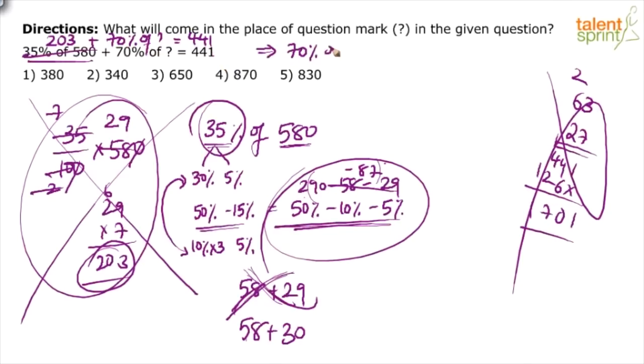So what do you do? 290 minus 58 minus 29. Don't write on paper. Adding 29 to 58 is difficult. So don't do that. Add 30. Adding 30 is very easy. 58 plus 30 is 88. But you also know you've added one extra, so it's 87. So 290 minus 87. 290 minus 87 is 203. So the first term becomes 203. Plus 70% of x equals 441. 70% of what is 238? This comes out to be 238 divided by 7, which is 34 times. So 340 should be the answer. Option 2.